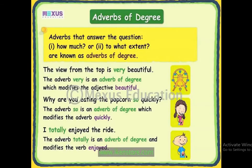Coming to the next type: adverbs of degree. After adverbs of frequency, we are discussing adverbs of degree. Degree means to what extent something is happening — how much. If the words are answering these two questions, the adverbs will be known as adverbs of degree. It tells us how much or in what degree an action is done.